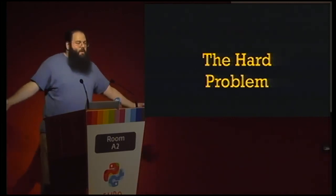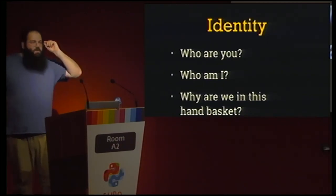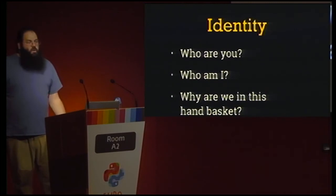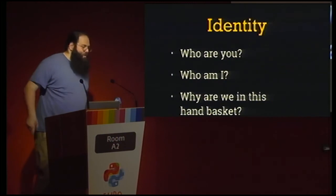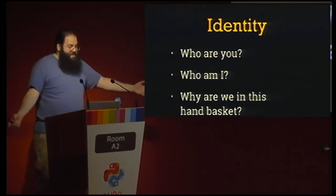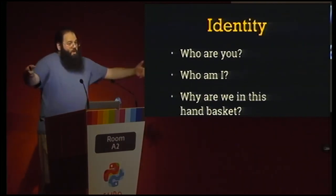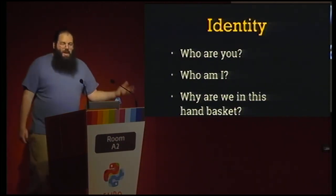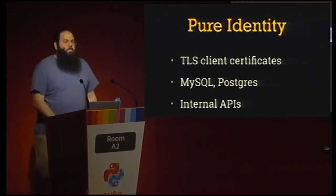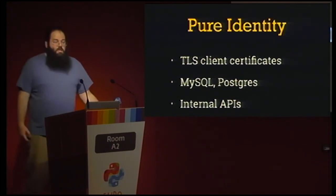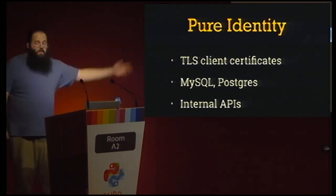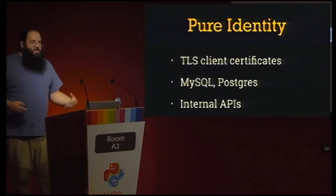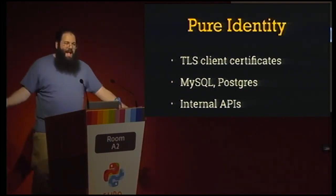We keep dancing around the hard problem: any secrets management system needs to establish an identity relationship between the thing that wants secrets and the thing that has them — generally called a secure introduction. Often this boils down to SSHing to an IP from somewhere you trust and assuming whatever answers that connection is who it says it is. Some clouds have better mechanisms like EC2's instance identity document. As a corollary, if you build identity or secure introduction, in many cases you can skip secrets management altogether and use TLS client certificate authentication. MySQL and Postgres directly support TLS client certificates, letting you skip passwords entirely.